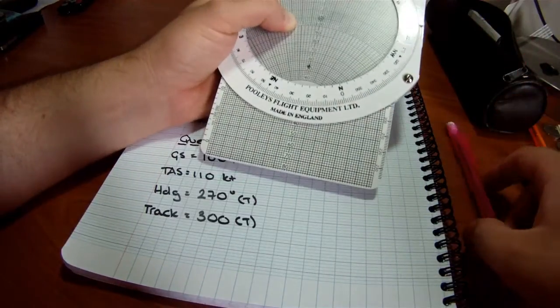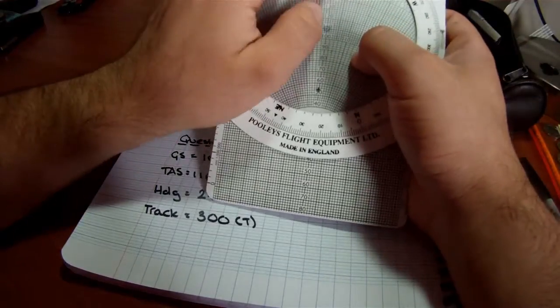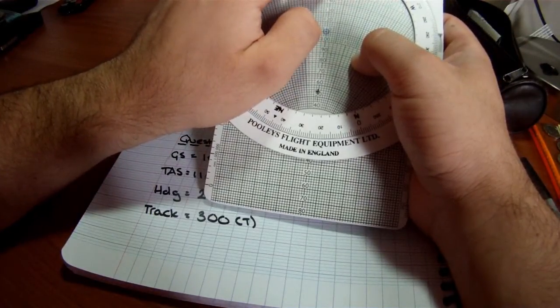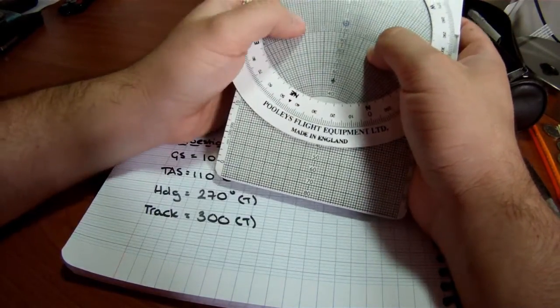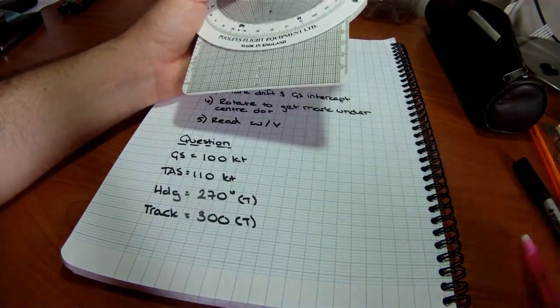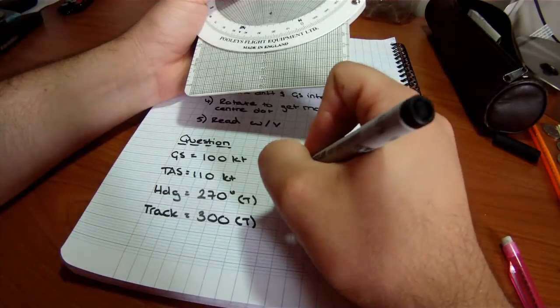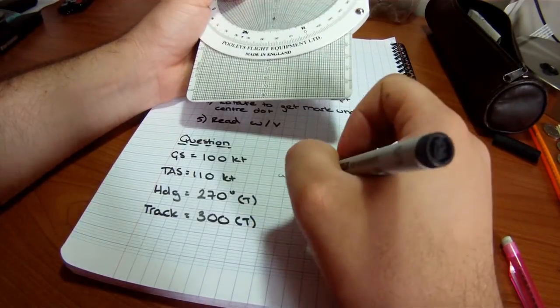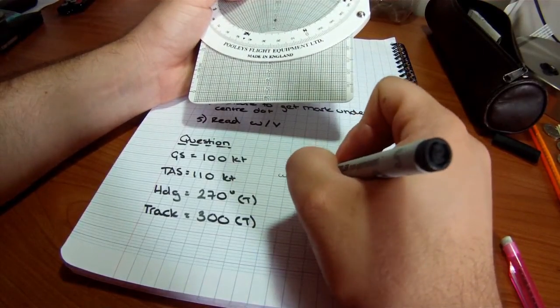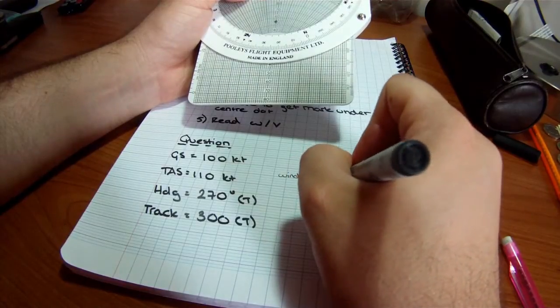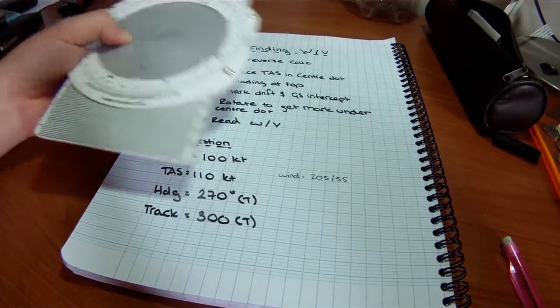So we've got 55 knots wind coming from 204 or 205. So that is the wind. Let's write it down here: equals 205, 55 knots. That is the answer to this question.